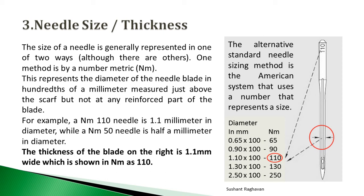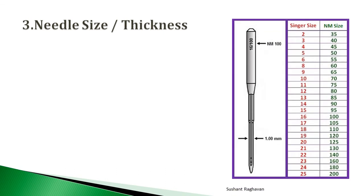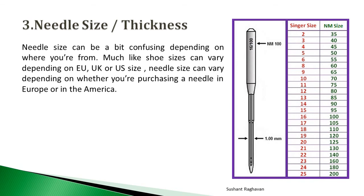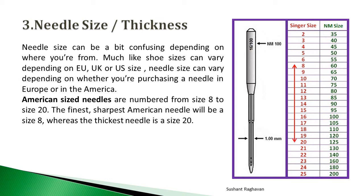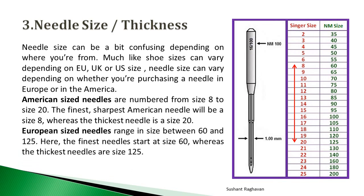The alternative standard needle sizing method is the American system, which uses a number that represents the size. Needle size can be a bit confusing depending on where you are from — much like shoe sizes vary depending on EU, UK, or US sizing. American size needles are numbered from size 8 to size 20; the finest, sharpest needle is size 8 whereas the thickest is size 20. European size needles range from size 60 to size 125, with the finest at 60 and the thickest at 125.